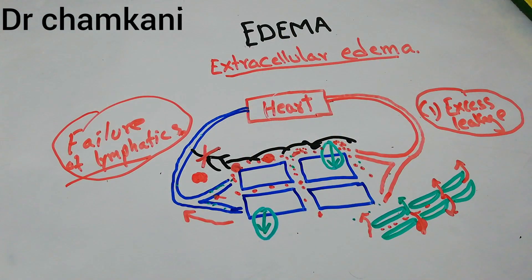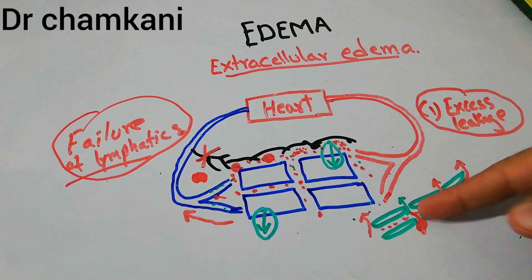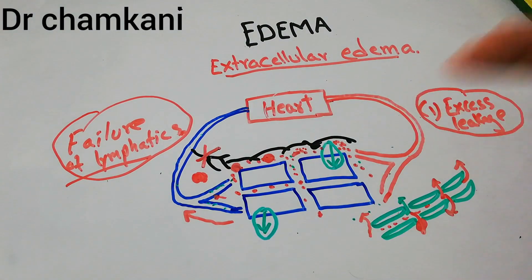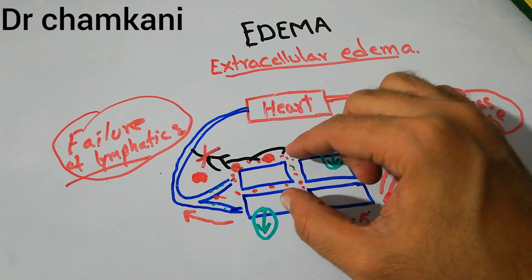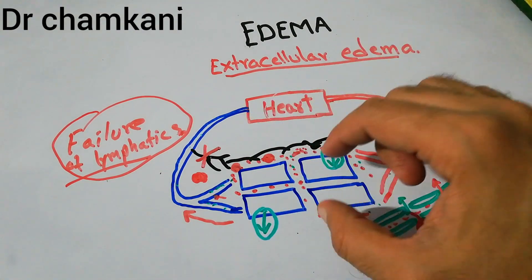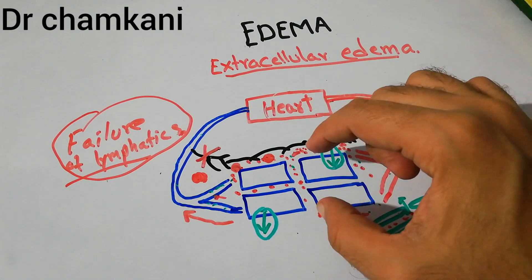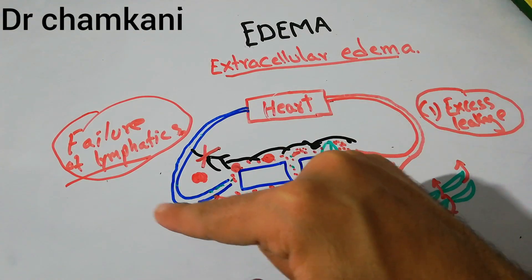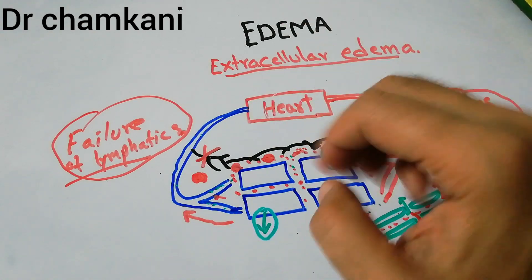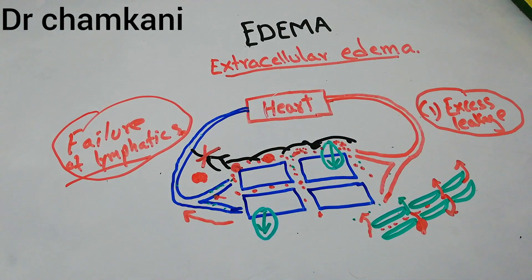So the causes of extracellular edema include excessive leakage of plasma from the capillaries and failure of lymphatics. Both factors lead to excessive fluid in the interstitial spaces — more fluid coming in and less being drained — resulting in excess fluid in the extracellular spaces. These are the two main categories of extracellular edema. Thanks for watching.